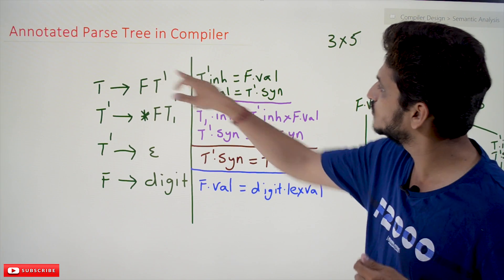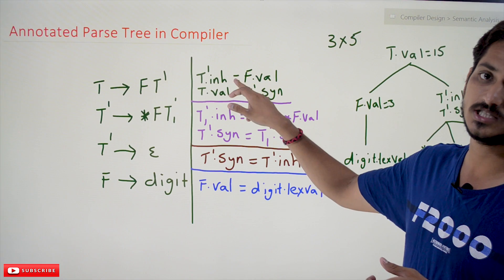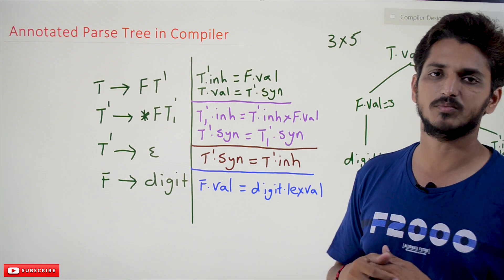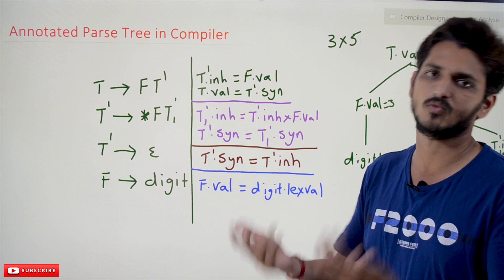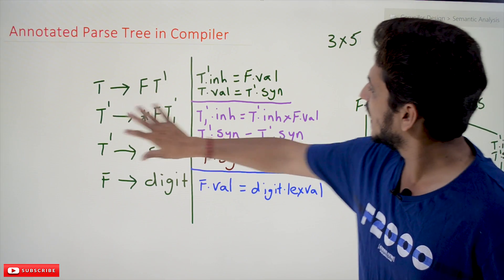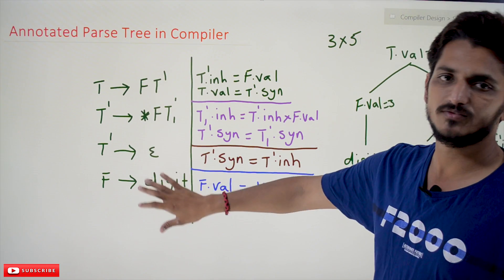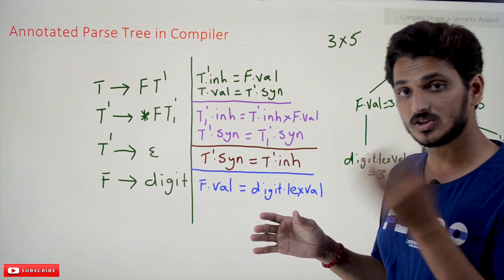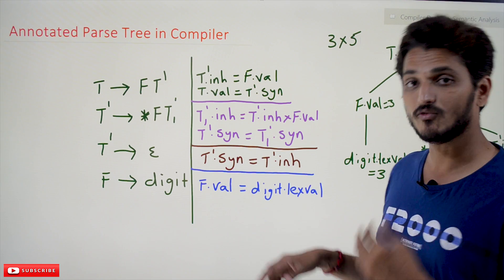One more thing to understand: for T' we have two attributes — 'inh' is one attribute and 'syn' is another. You can give any number of attributes according to your requirement. Similarly, the remaining conditions are given for the CFG — try to elaborate whether each is a synthesized or inherited attribute based on the condition.